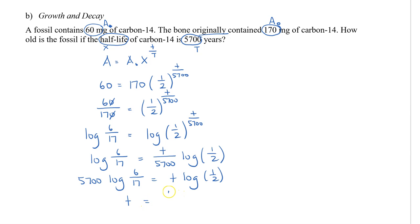Our last step is to divide by log half. So T equals 5,700 times log 6 over 17, all divided by log half. When you type this into your calculator, you're going to see that this is 8,564.25 years old. You can plug it in just to make sure that when you plug this value in for T, when you solve the right side, you will actually get 60.